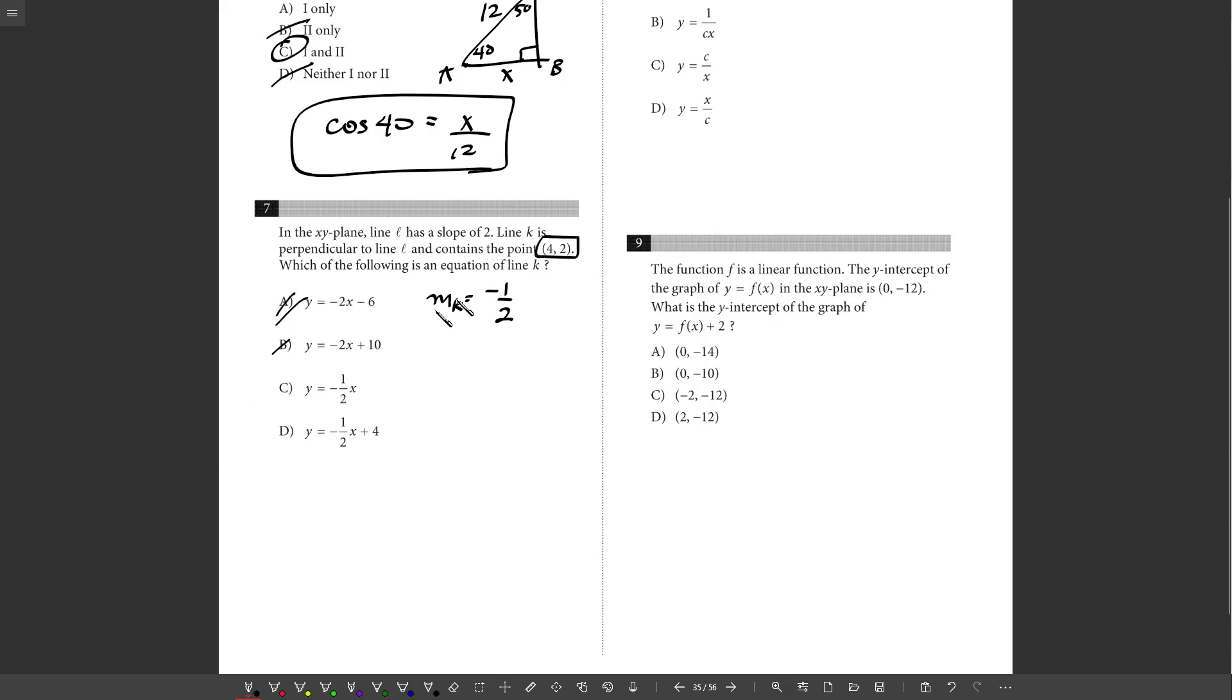It also contains the point 4, 2. So at this point, I could find the y-intercept, or you could just plug in this point into C or D and see which one works. And when I plug it into C, it doesn't work because I get 2 equals negative 2. But for D, I will get 2 equals negative 2 plus 4, which is true. Again, if you were to graph this or find the y-intercept otherwise, you would verify that D is the answer. So 7 is D.